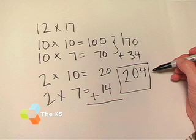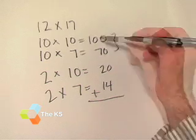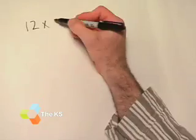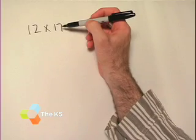Hold on a second here. For adults relearning multiplication, this looks really confusing. So let me explain it. The 12 times 17—what we're doing is breaking up the numbers as I said before.